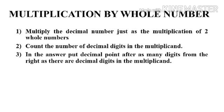To multiply a decimal number by a whole number, we can follow some rules. When we are multiplying the decimal number by a whole number, just do it as the multiplication of two whole numbers. Then count the number of decimal digits in the multiplicand. After that, in the answer, put the decimal point after as many digits from the right as there are decimal digits in the multiplicand — that is, the number of decimal places in the product must equal the number of decimal places of the multiplicand. Let me explain it with an example.